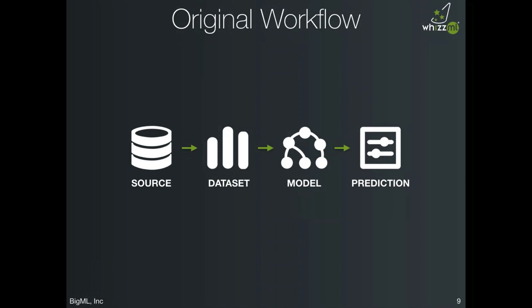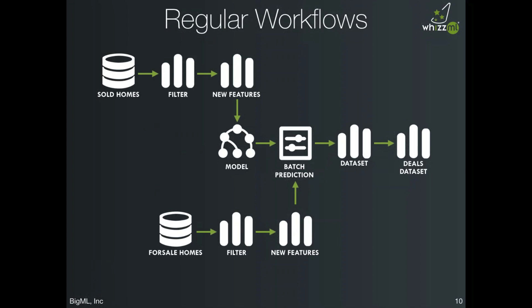Here's a real-world workflow for finding real estate deals. The idea is to build a model that predicts the sale price of a home, then use this model to look for deals among all houses currently for sale by running a batch prediction and computing the difference between the predicted price and the list price. As you can see, we start with two separate sources, do some filtering and feature engineering before modeling, and then post-process the output. If you wanted to rerun this workflow for different cities, you'd want it automated — and WizML can solve this exact workflow.